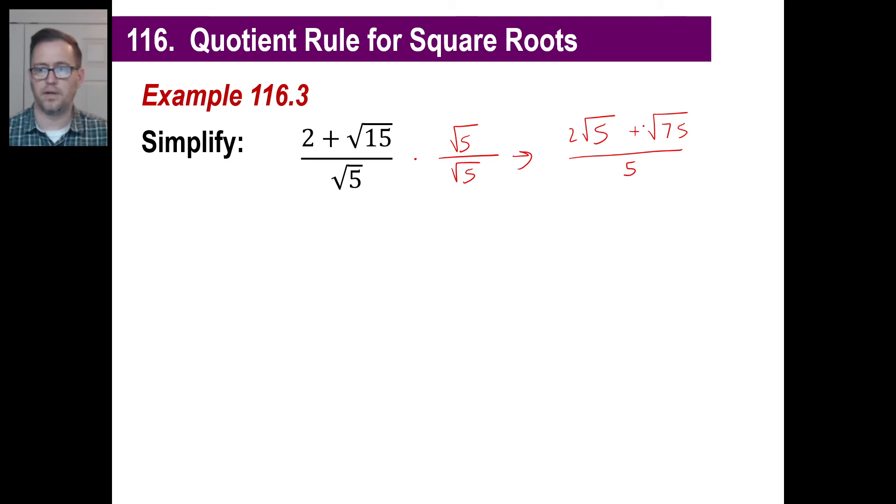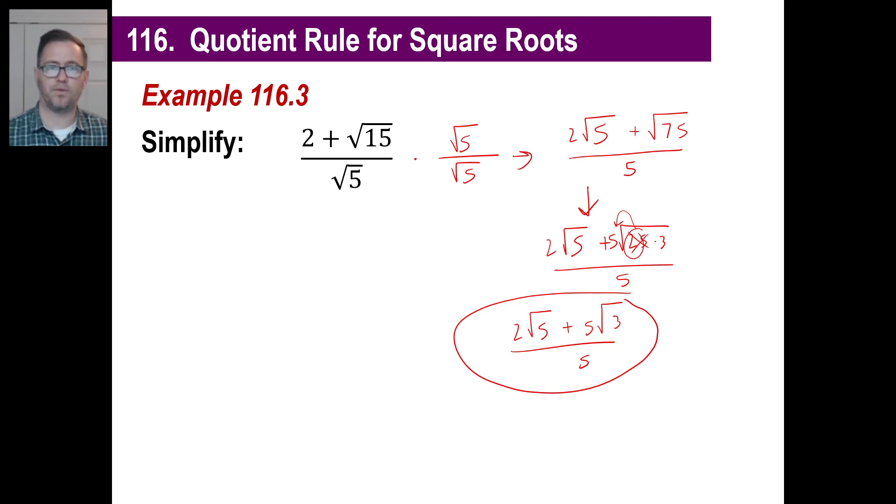Now, the only thing you're going to need to change here, this 75 can be broken down. So let's rewrite: 2 square root of 5 plus, and then let's rewrite, what are some factors of 75? Use a factor tree, but you might immediately see, oh wait a minute, that is 25 times 3 over 5. You could go, okay, the square root of 25, I'm going to bring it out here. It turns into a 5. So now I have 2 square root of 5 plus 5, and then the only thing left underneath the radical is the square root of 3. And all that is going to be over 5. And there we go. 5 is a rational number.